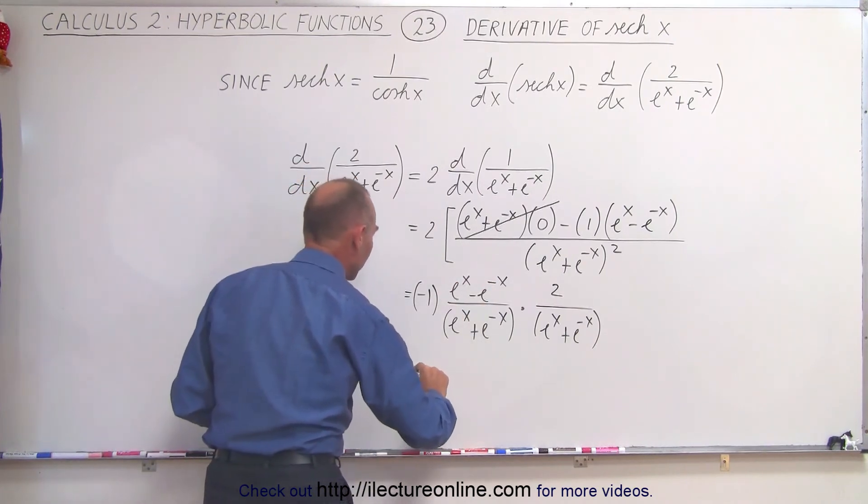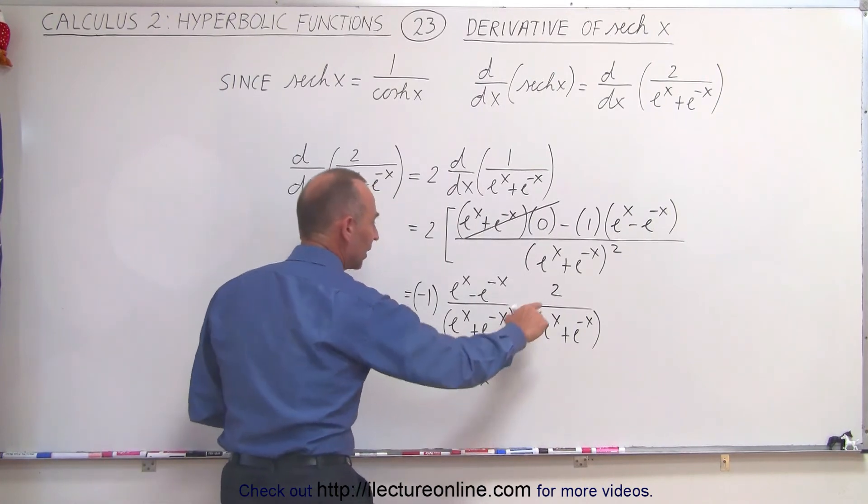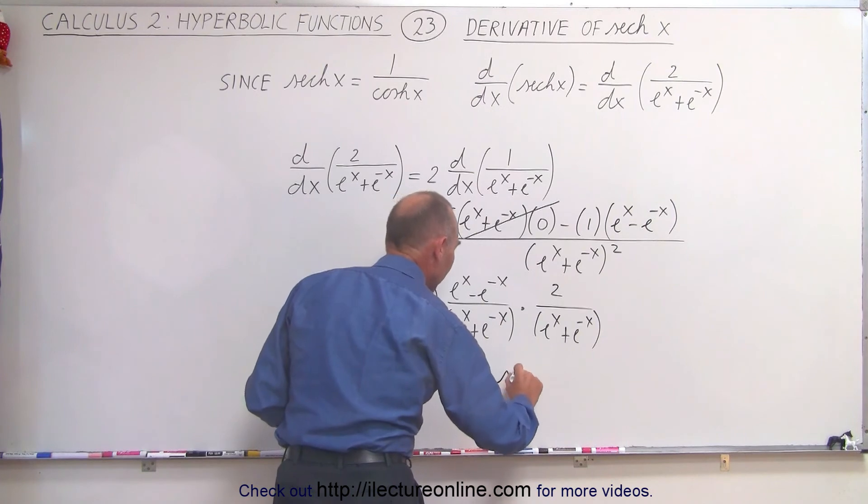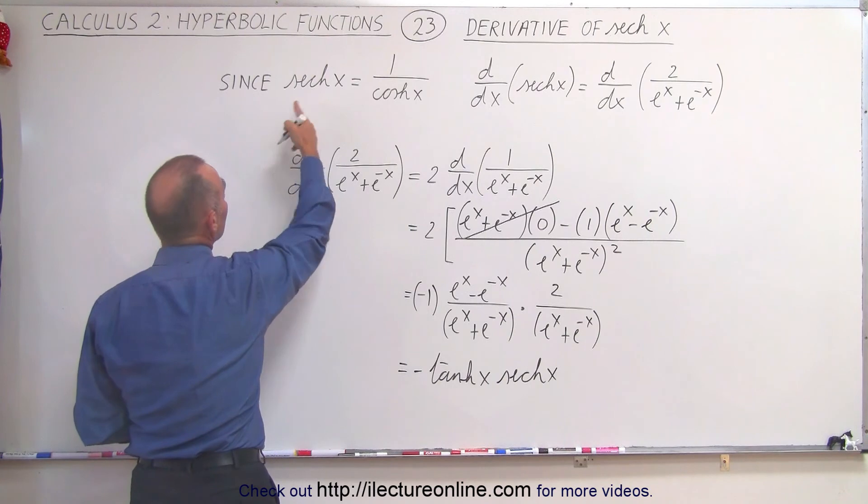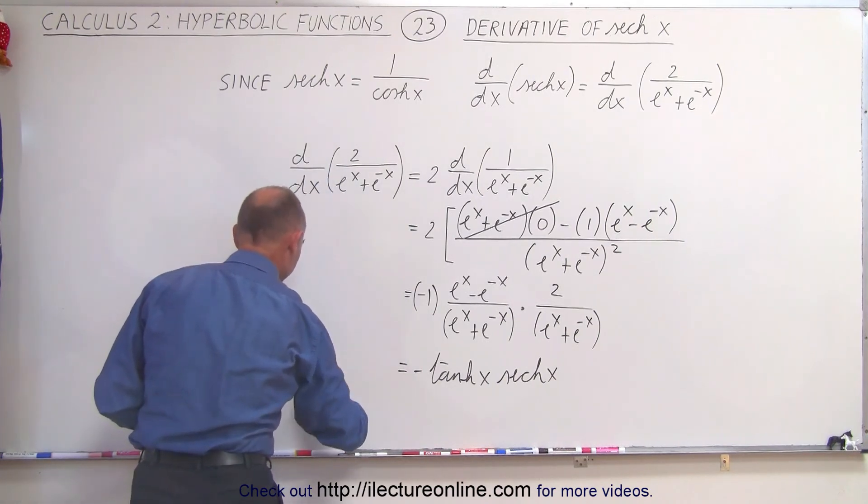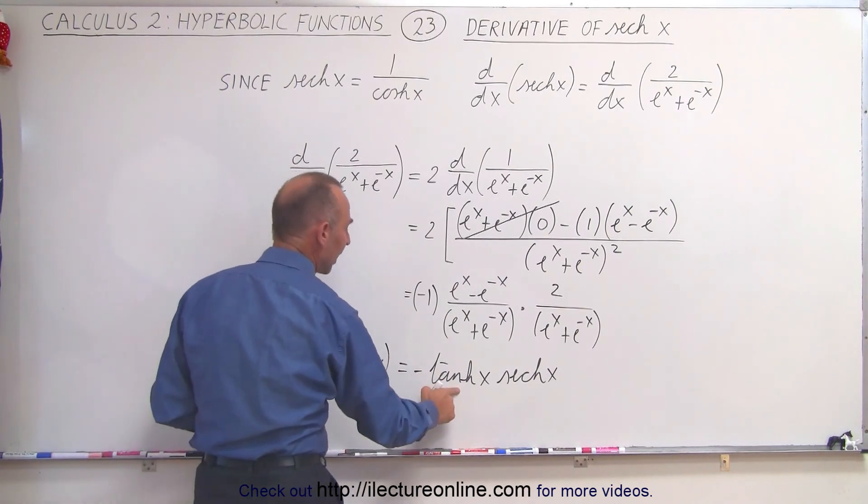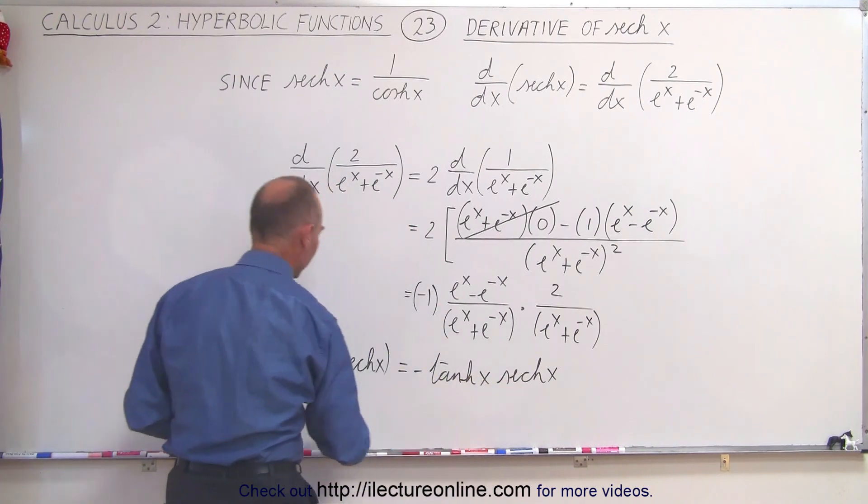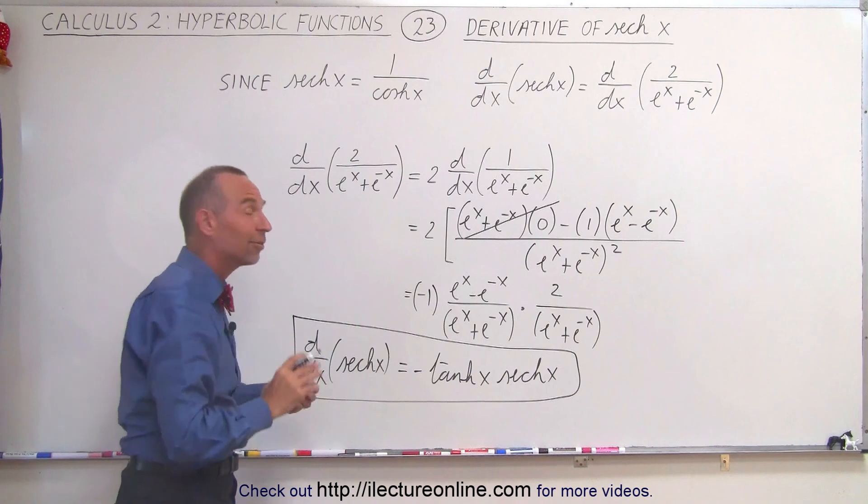So this becomes equal to minus the hyperbolic tangent of x, and this becomes the hyperbolic secant of x. And so when we take the derivative of the hyperbolic secant of x, so the d dx of the hyperbolic secant of x, we get the negative hyperbolic tangent of x times the hyperbolic secant of x. And that's how we know that.